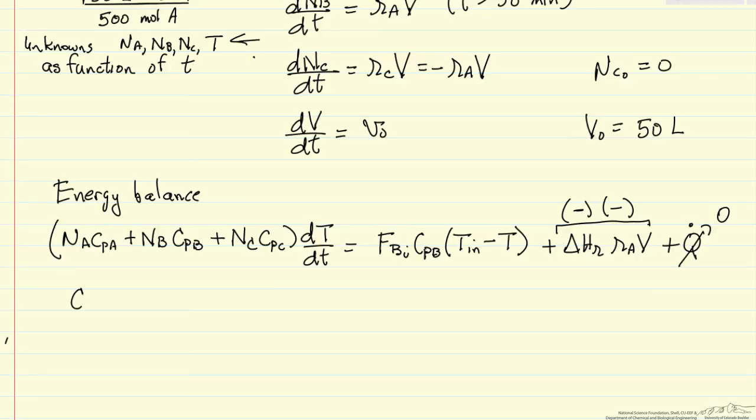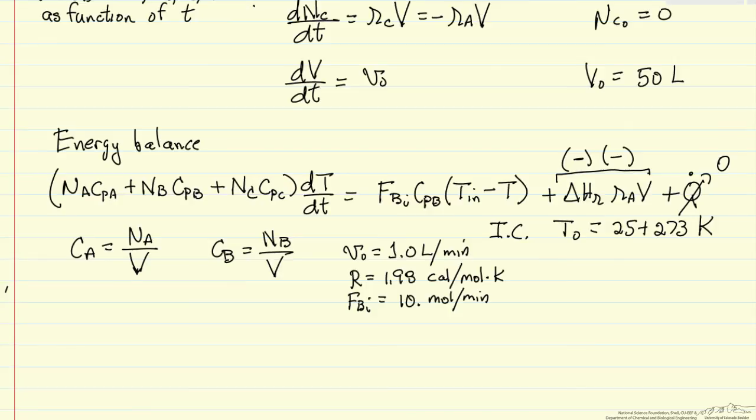With the energy balance, I just need the other equations, because in our rate expression I have a concentration. I need to determine that concentration, and it's a function of number of moles, which is changing, and the volume, which is also changing. Same for B: number of moles divided by the volume. The only other thing I need is an initial condition for this energy balance, and that's T0 equals 25 degrees plus 273, to put it in Kelvin. I need the rate constant: 1.7 times 10 to the fourth, e to the minus 10,000 over RT, where 10,000 is in calories per mole, so we use the R value of 1.98. Temperature is an absolute temperature.